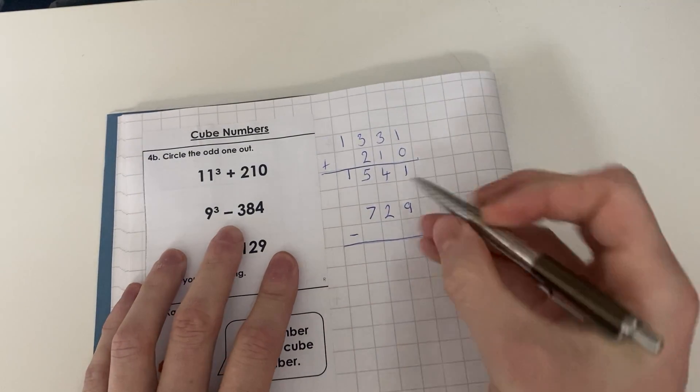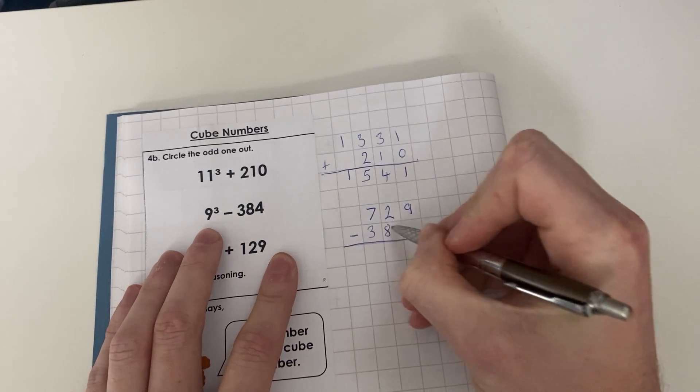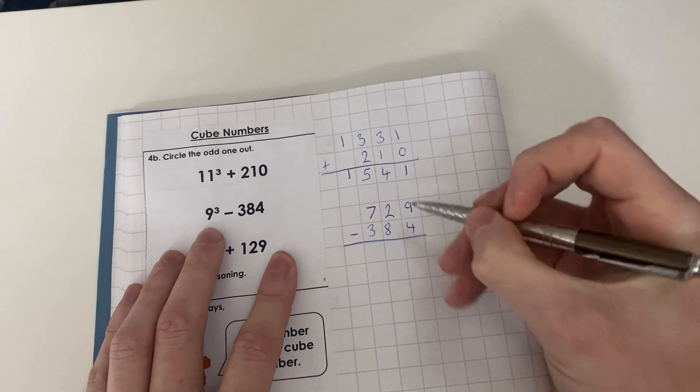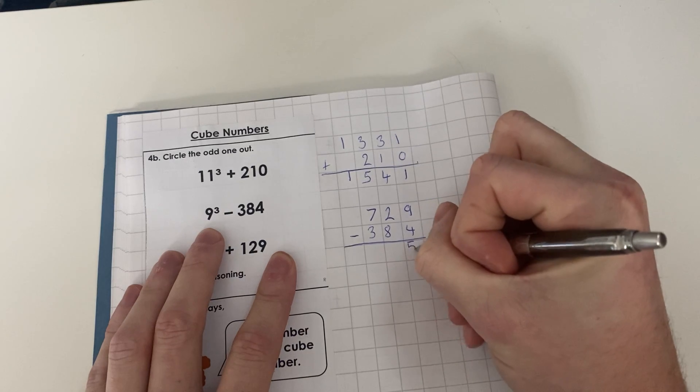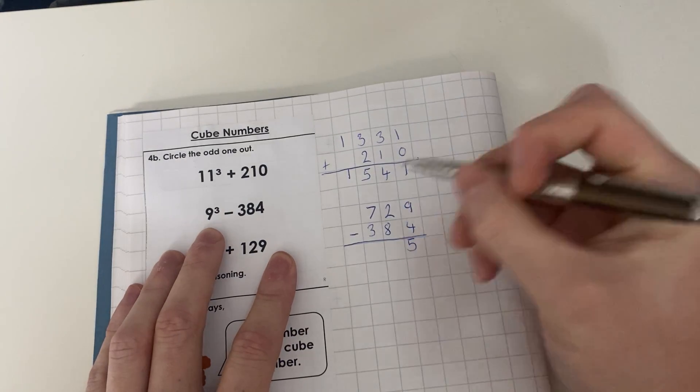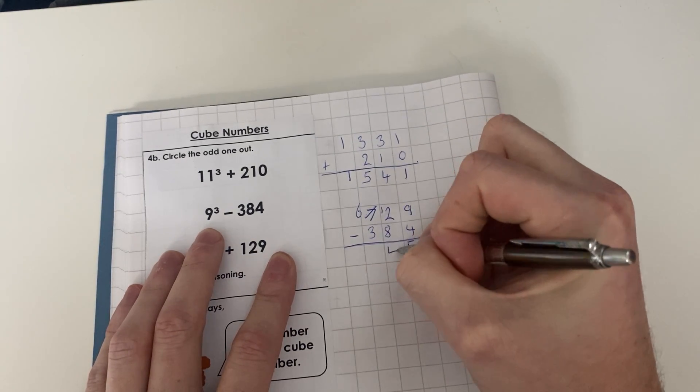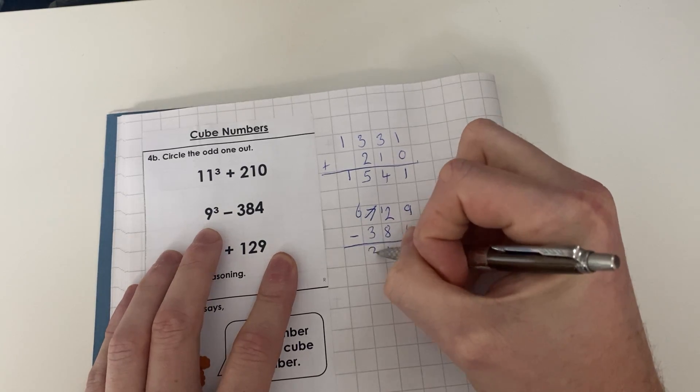729 - 384. 9 - 4 = 5, 2 - 8 we cannot do, so we exchange. 12 - 8 = 4, 6 - 3 = 3. So the answer is 345.